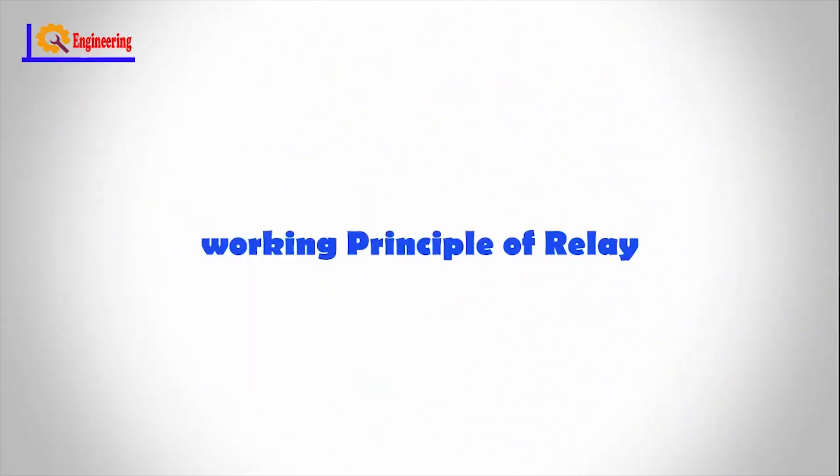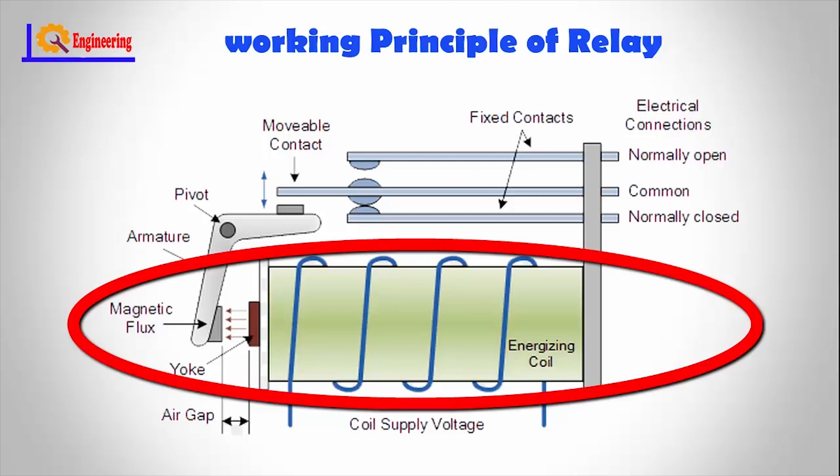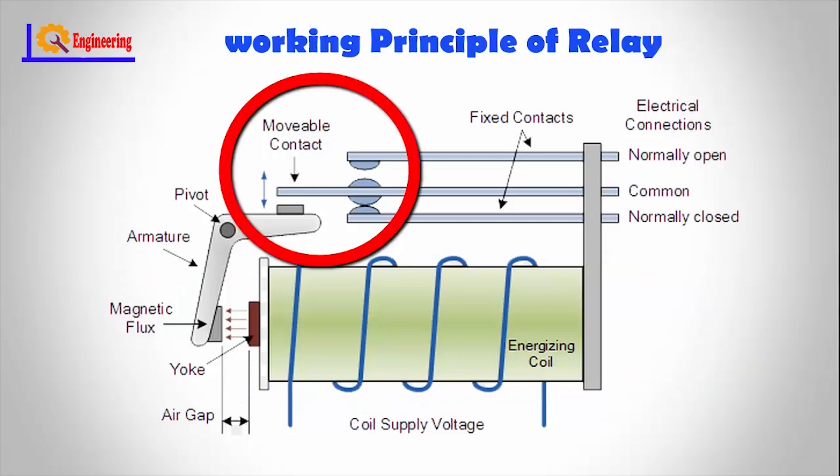Working Principle of Relay: When power flows through the first circuit, it activates the electromagnet, generating a magnetic field that attracts a contact and activates the second circuit. When the power is switched off, a spring pulls the contact back up to its original position, switching the second circuit off again.